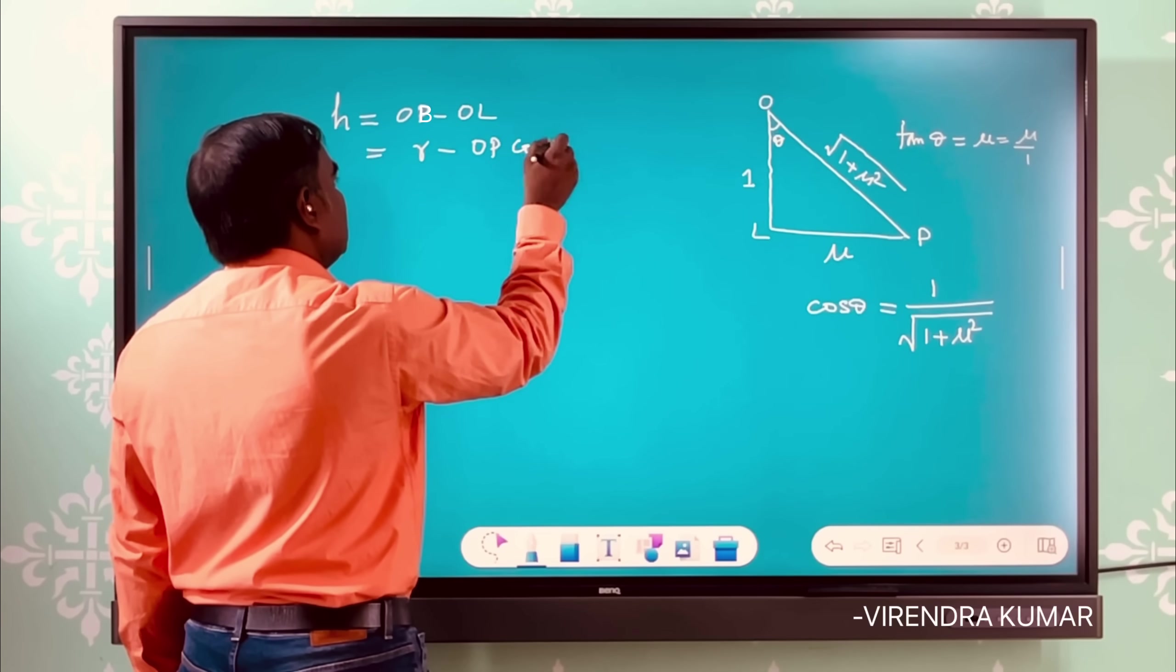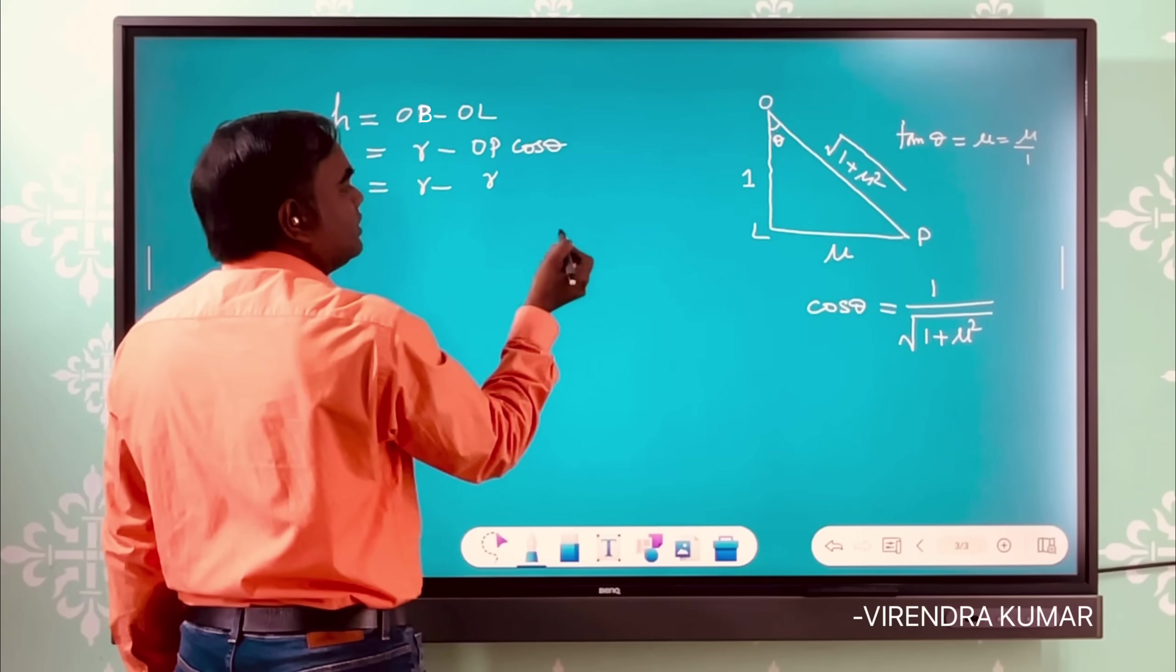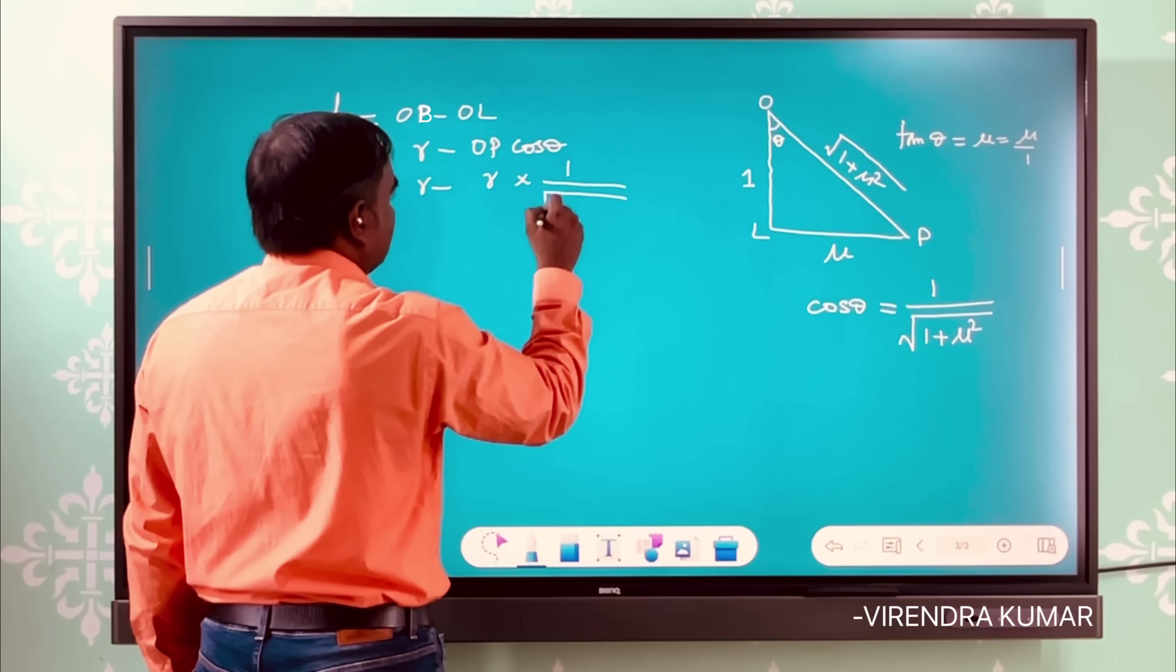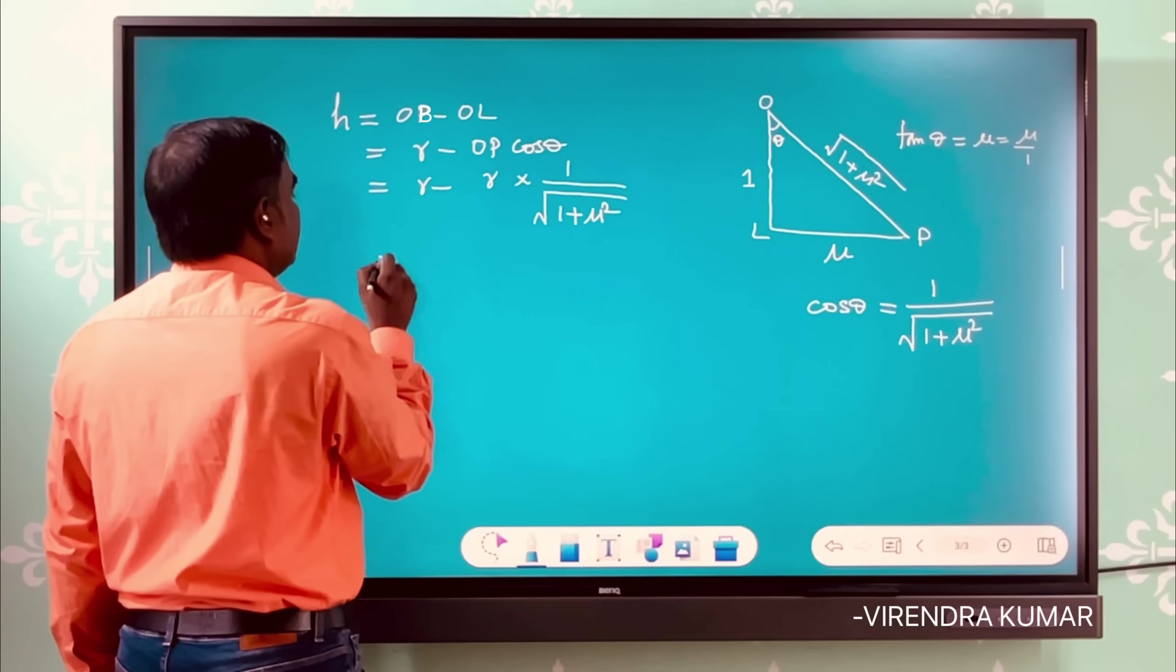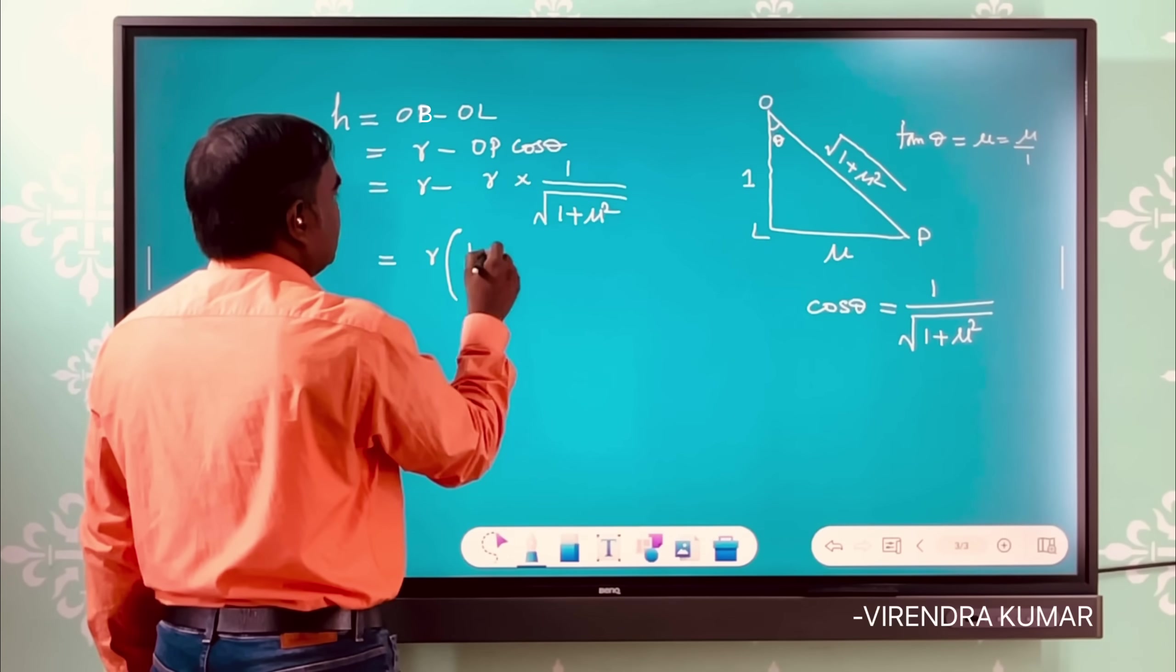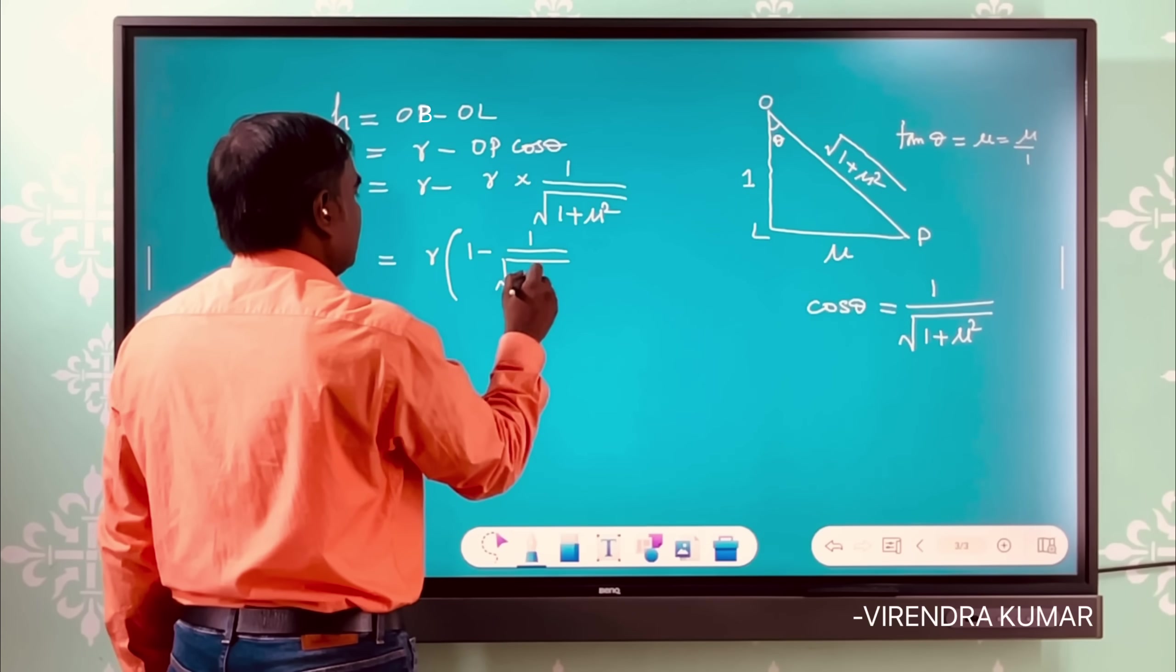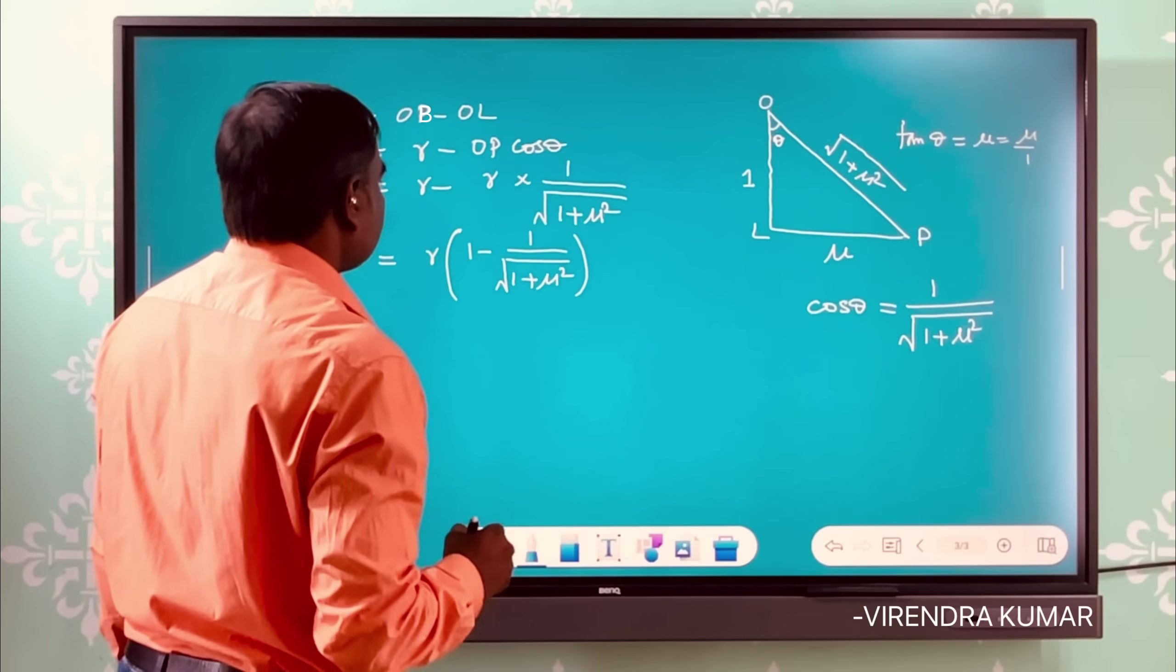And that is equal to r minus r cos θ. Cos θ is equal to 1 upon √(1 + μ²). So we get h equals r times (1 - 1/√(1 + μ²)).